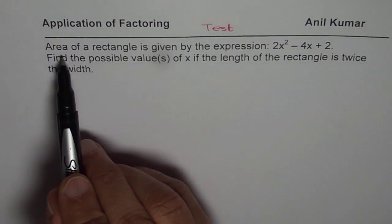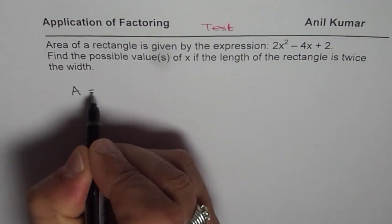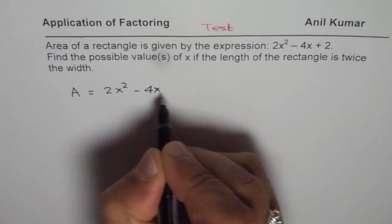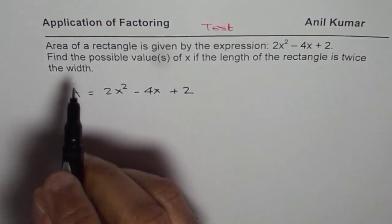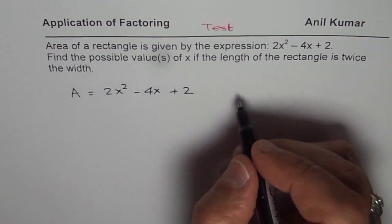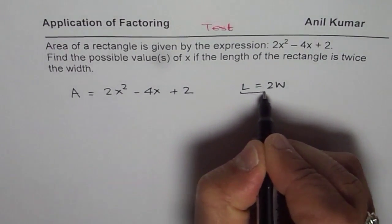What we are given here is that area of rectangle is given by the expression. So we have area equals to 2x²-4x+2. Find possible values of x if length of the rectangle is twice width. So we know length is equal to twice width.